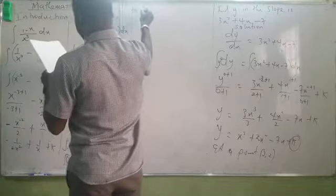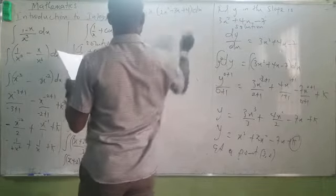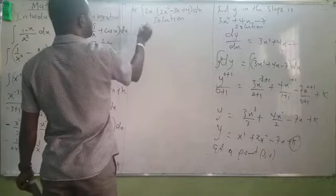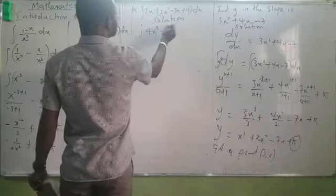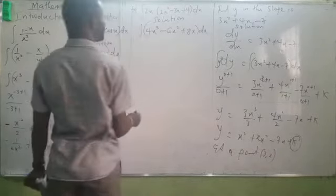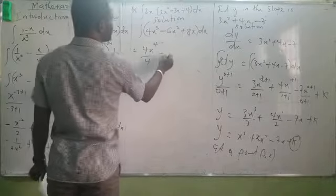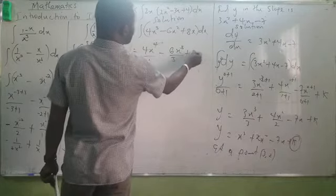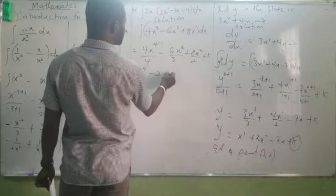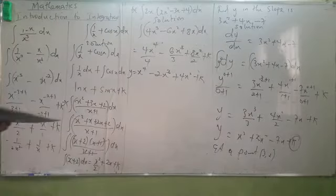Problem: evaluate the integral of 2x(x² − 3x + 4) dx. Expand the brackets to get the integral of 2x³ − 6x² + 8x dx. Integrating term by term: 2x^4/4 − 6x^3/3 + 8x^2/2 + k, which simplifies to x^4 − 2x³ + 4x² + k. That is the final answer.